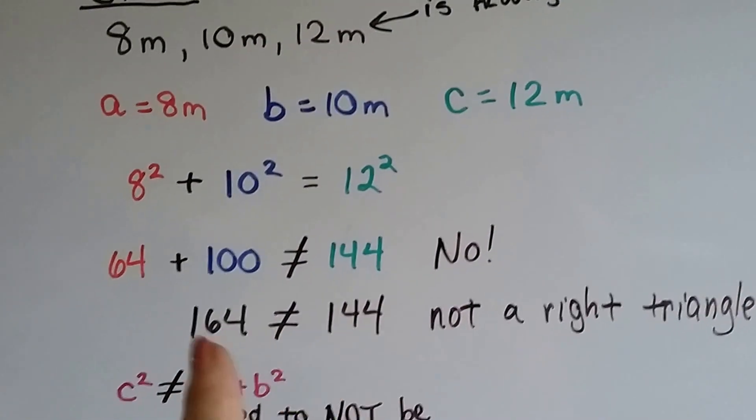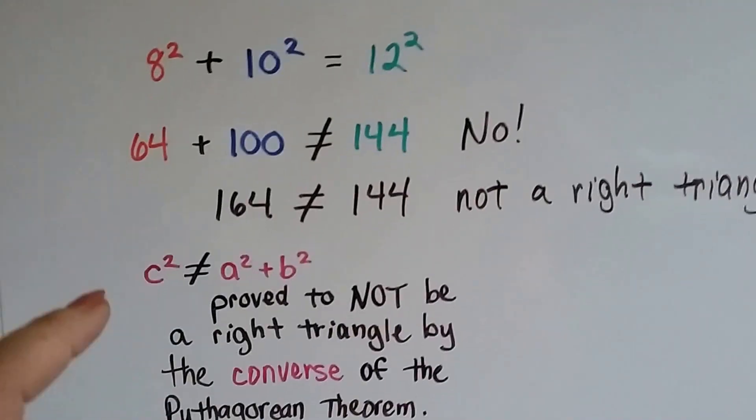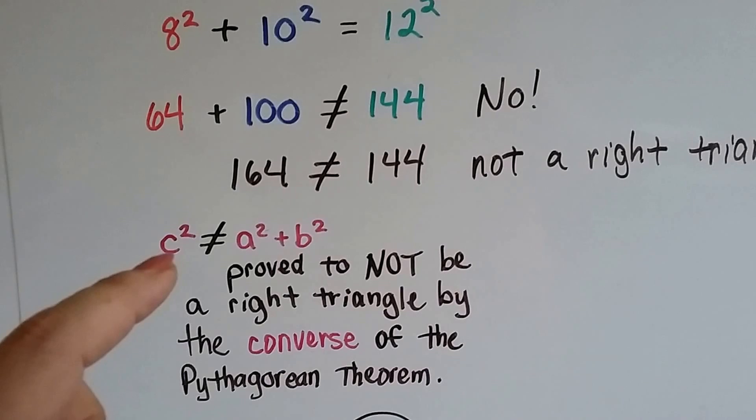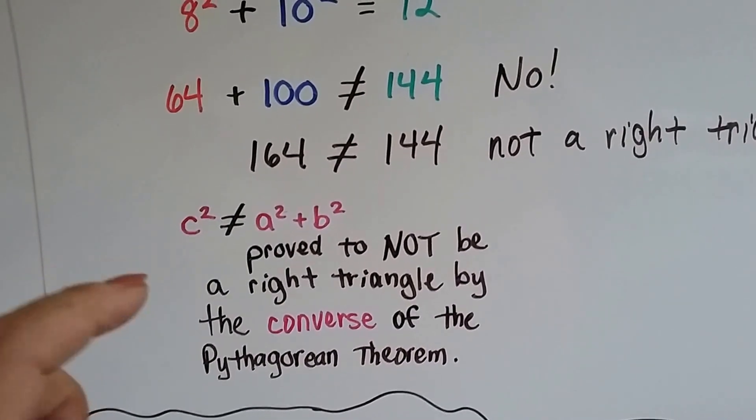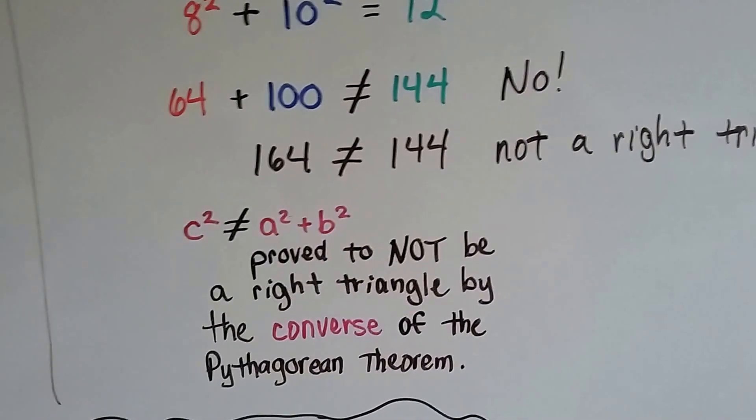This is not a right triangle. These are not equal to each other. So c squared is not equal to a squared plus b squared. And it proved to not be a right triangle by the converse of the Pythagorean theorem.